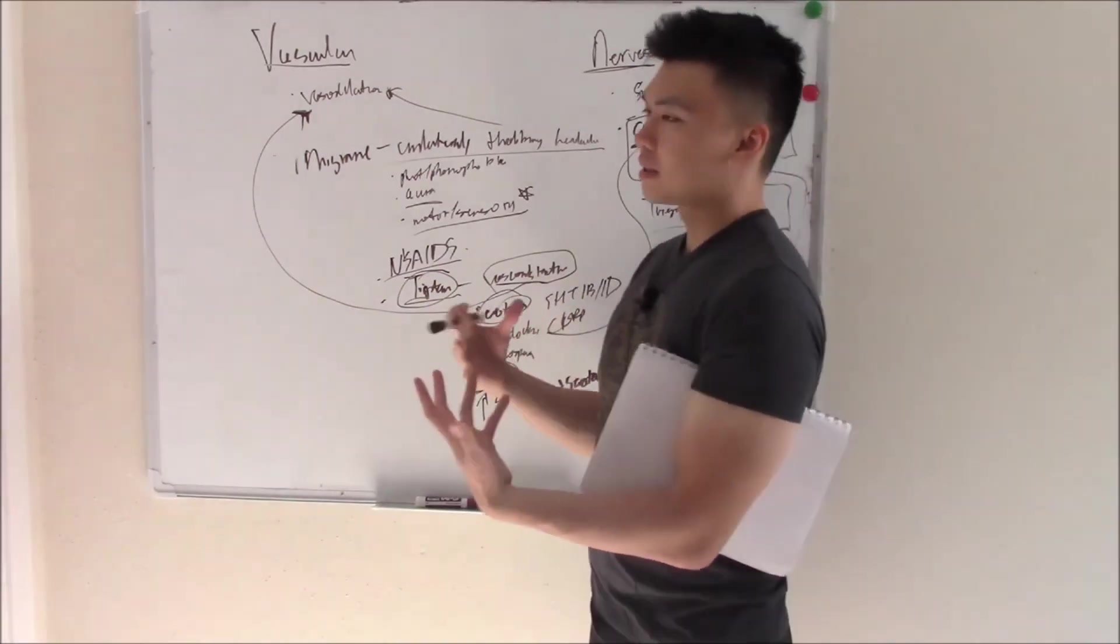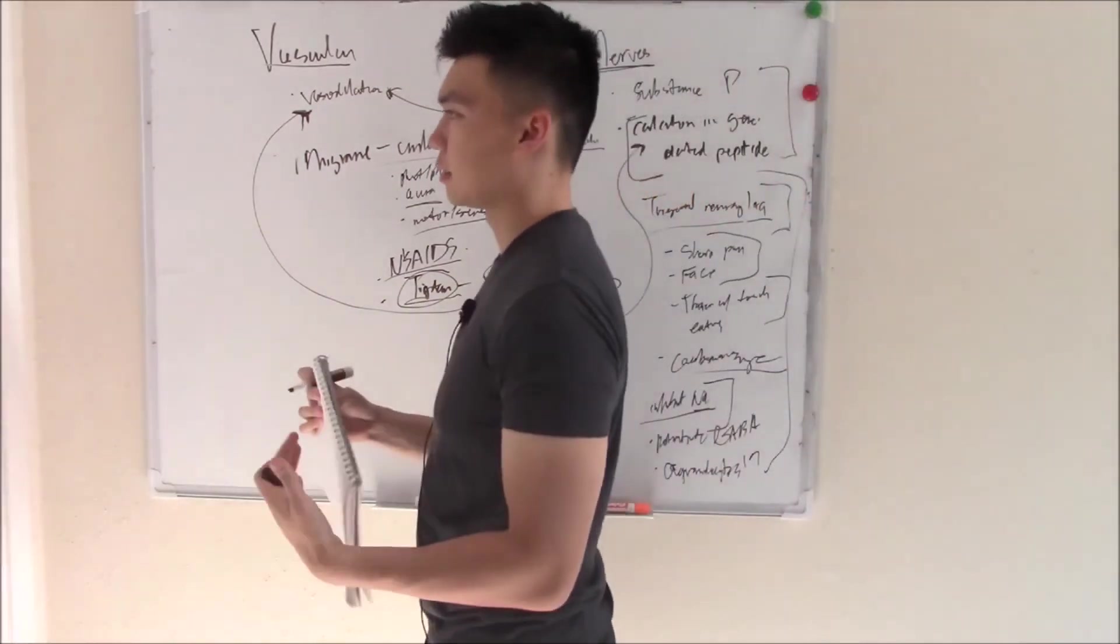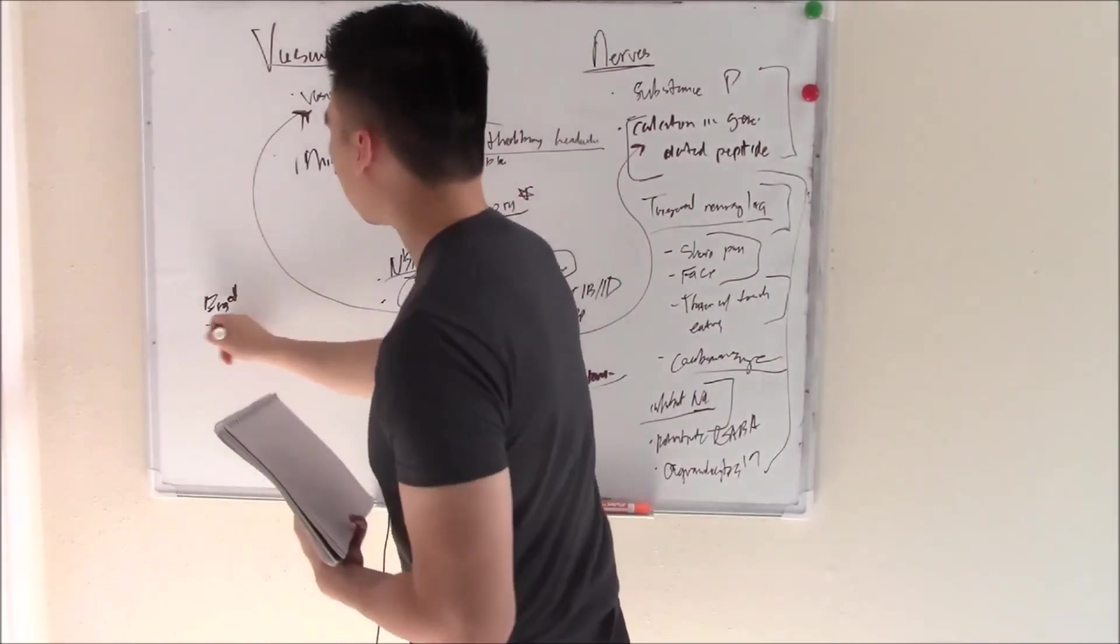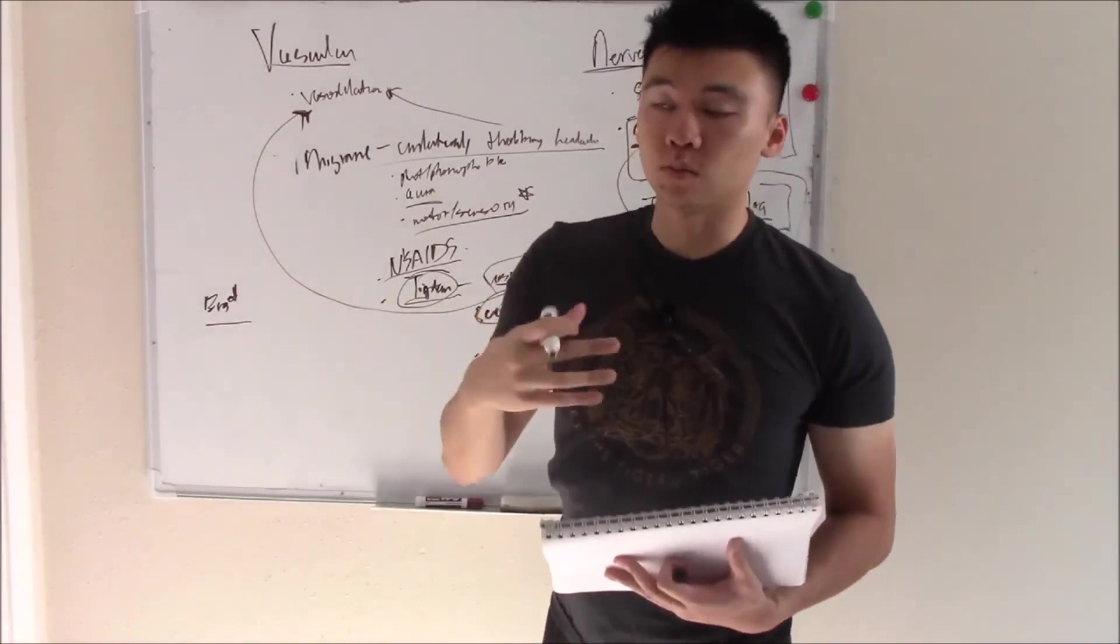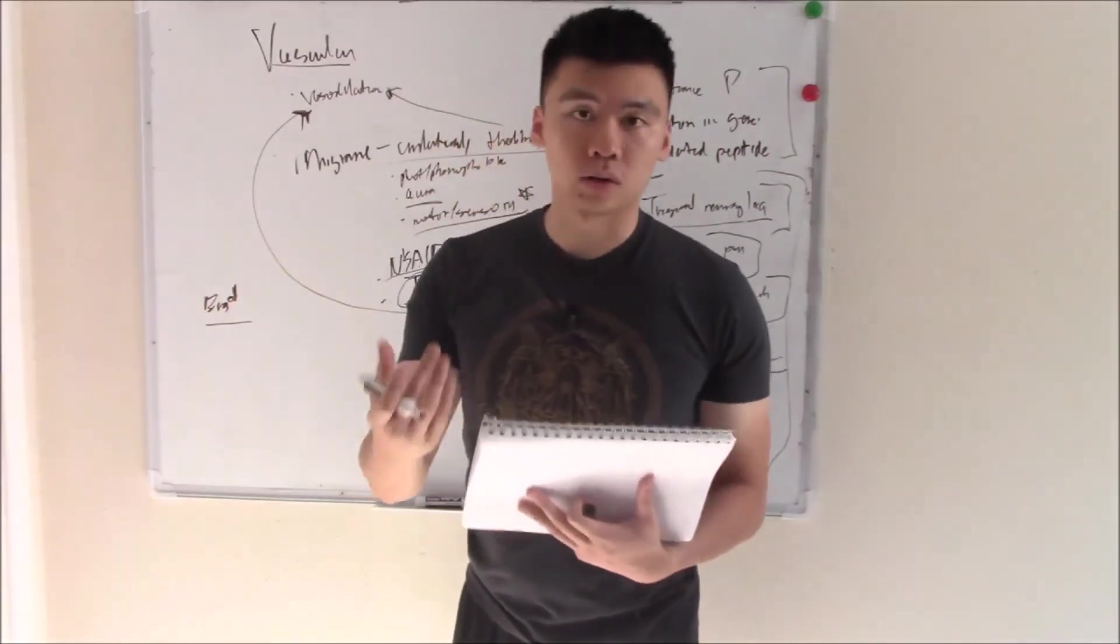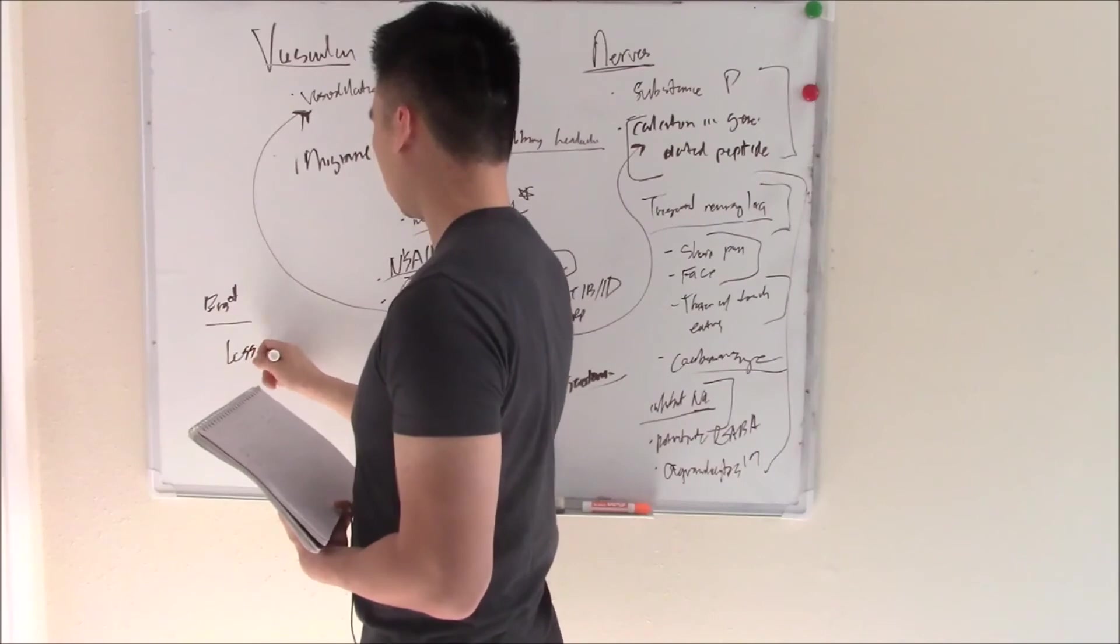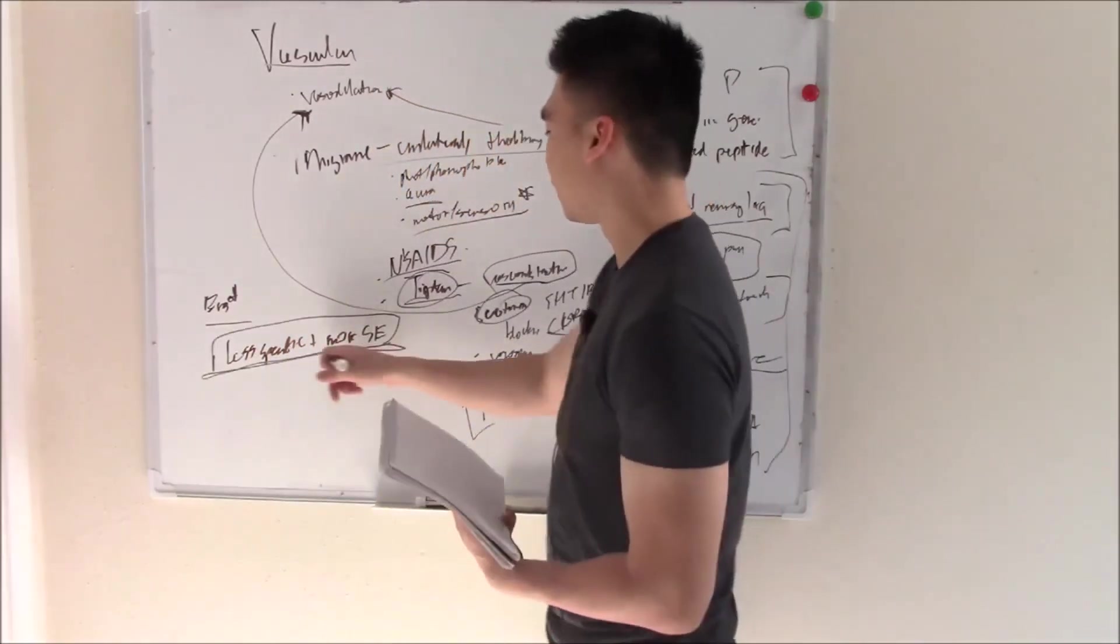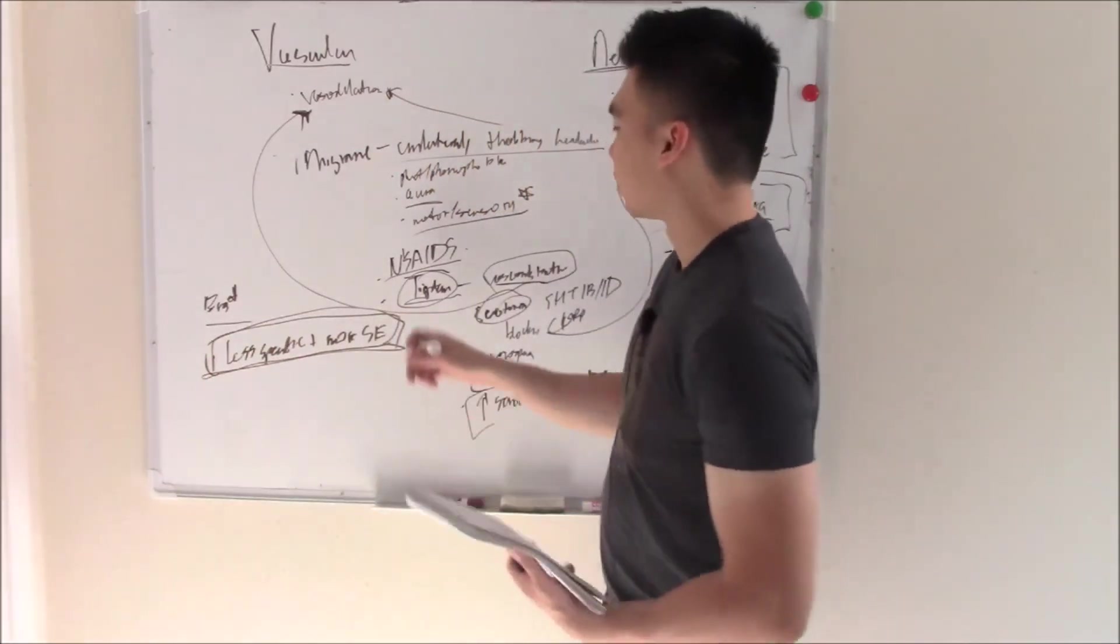Some other second-line drugs, drugs that we don't really use that much, are going to be ergot derivatives. Ergot meaning fungal, so fungi derivatives. And they work similar to triptans. So they cause vasoconstriction and they actually work on similar receptors, but they're a little less specific. So they also work on other receptors and can cause more side effects. That's why we don't use them that much anymore. So I'll just write less specific plus more side effects. Those are the two very bad things when I'm talking about drugs: less specific, more side effects. We don't want that. So we usually use triptans.